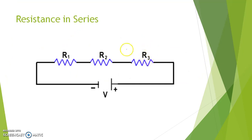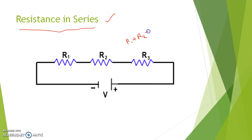First of all, I will show you resistance in series. Here R1, R2, R3 — three resistors are there, connected in series. What is the equivalent resistance? Equivalent resistance is R1 plus R2 plus R3. So we can say whenever two or more resistances are connected in series, the total or equivalent resistance of that system increases. Whenever we connect in series, the resistance increases.